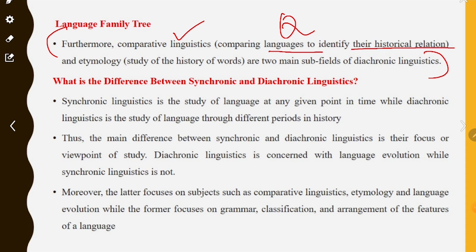For example, Tamil and Malayalam share historical relations. Comparative linguistics studies such connections, while etymology is the study of the history of words.